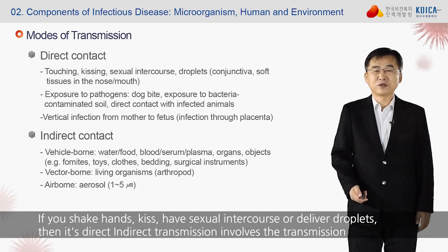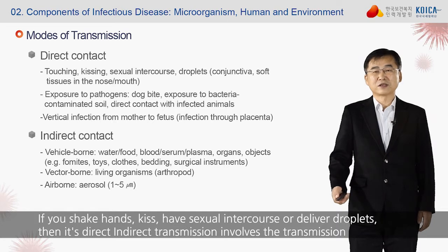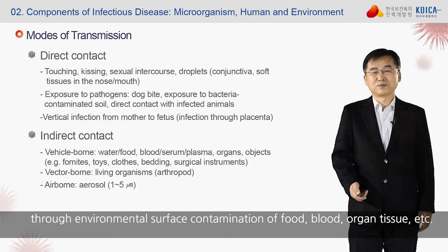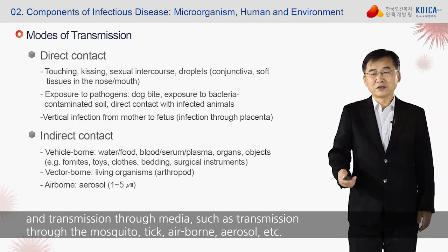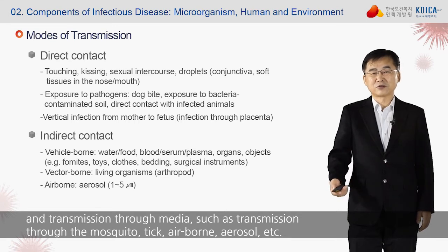If you shake hands, kiss, have sexual intercourse, or deliver droplets, that is direct transmission. Indirect transmission involves the transmission through environmental surface contamination of food, blood, organ, tissue, etc., and transmission through media such as mosquitoes, ticks, airborne, and aerosol.